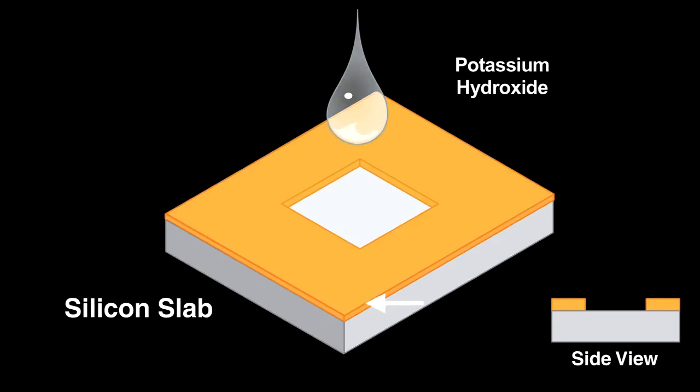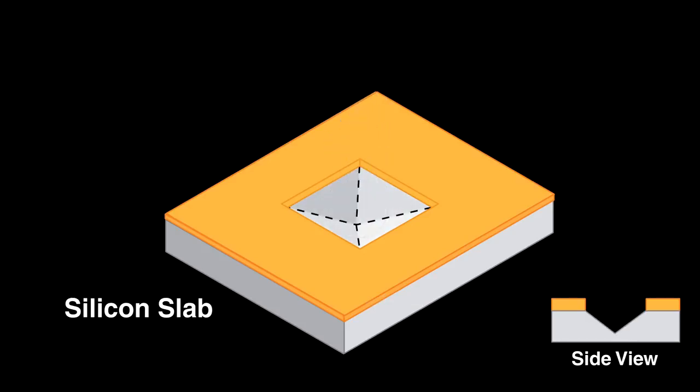The potassium hydroxide dissolves silicon faster in the vertical than in the horizontal direction. This is why it makes a pyramidal hole. Now, to make a cantilevered beam, engineers follow these steps.